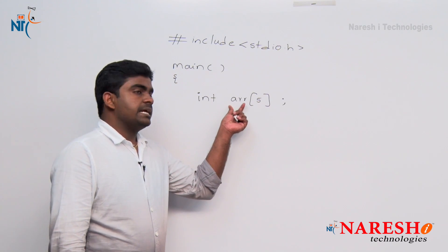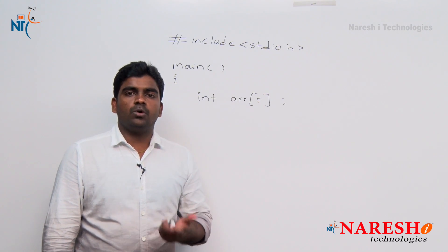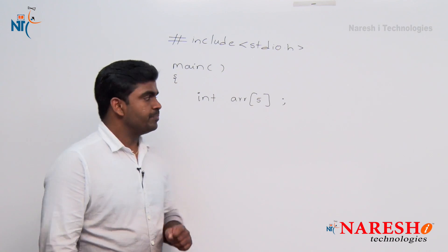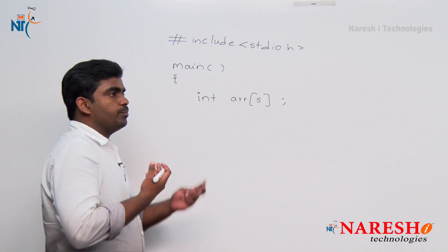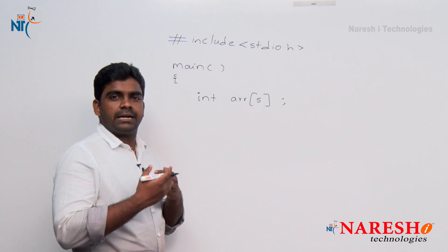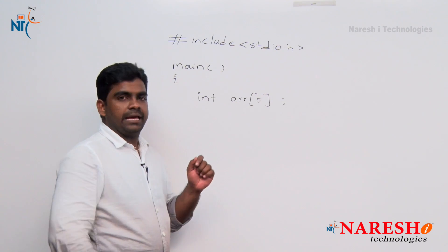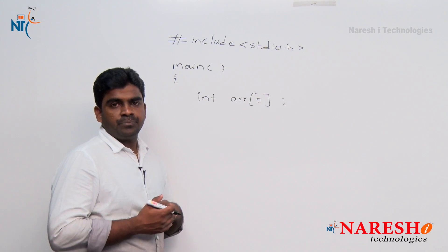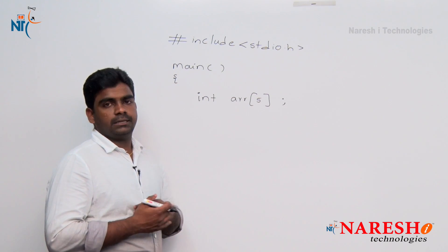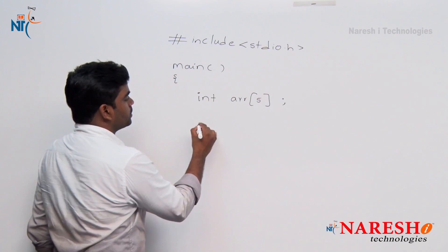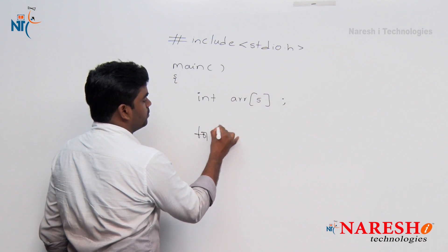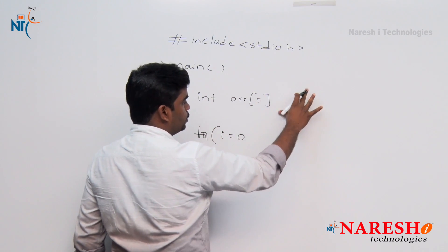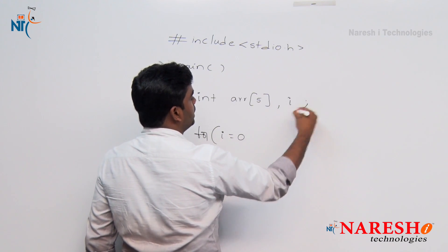If you are not initializing the array with any value, then what are the default values? Garbage values. So here, I want to print and check whether all these array locations are initialized with garbage values or not. Simple — just repeat one for loop and print. To print using the for loop, we need to declare the variable i.